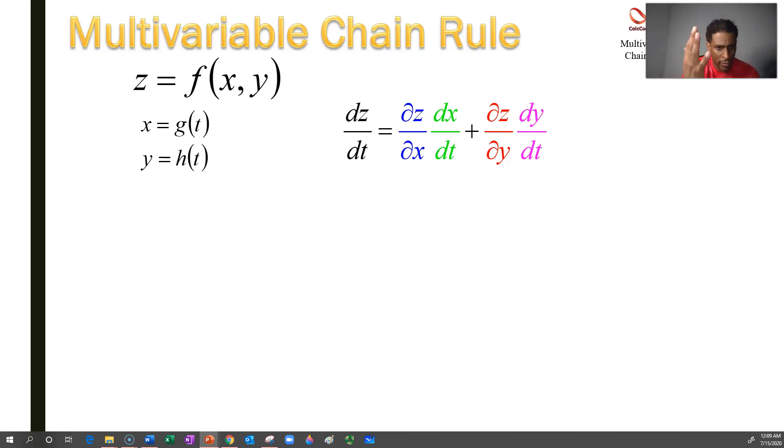You take the z derivative with respect to x, partial that is, and you multiply it by x's derivative with respect to t. That takes care of that portion. And then there's also the portion that comes from y, you take the z derivative with respect to y, partial that is, and you multiply it by y's derivative with respect to t.